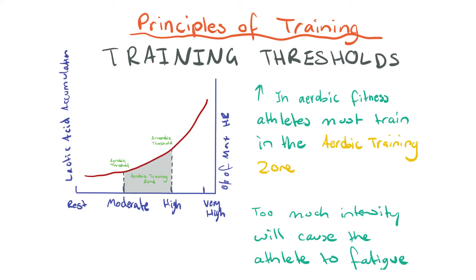The aerobic training zone ends at the anaerobic threshold, where the body is working at too high an intensity. The aerobic training zone occurs between the aerobic threshold — approximately 60 to 65 percent of maximum heart rate and lactic acid levels of approximately 2 millimoles — and the anaerobic threshold, which is approximately 80 to 85 percent of maximum heart rate with lactic acid levels of approximately 4 millimoles.